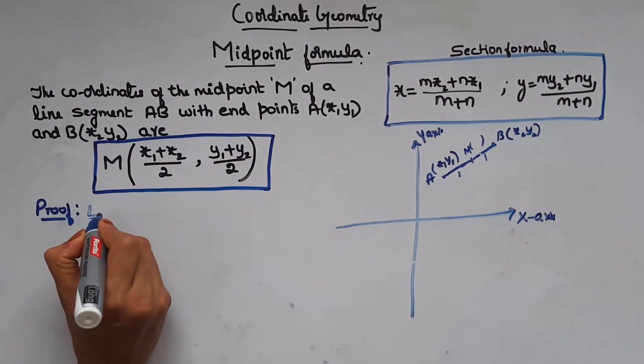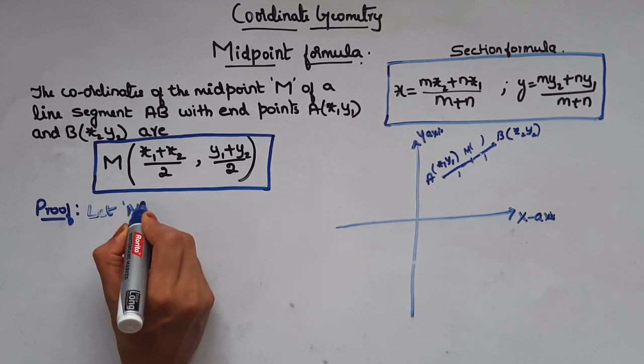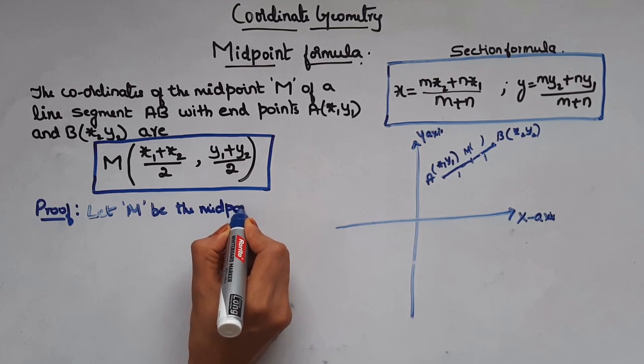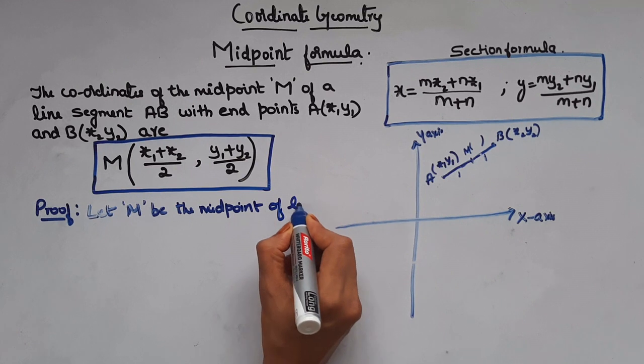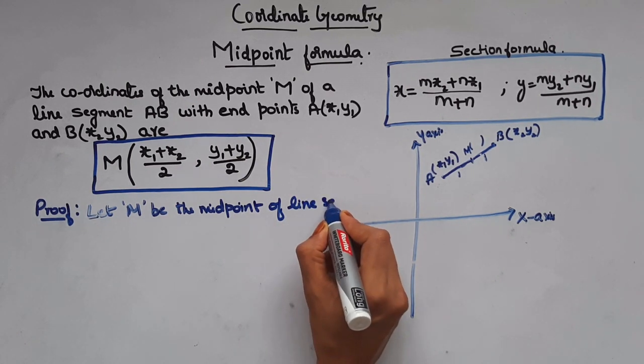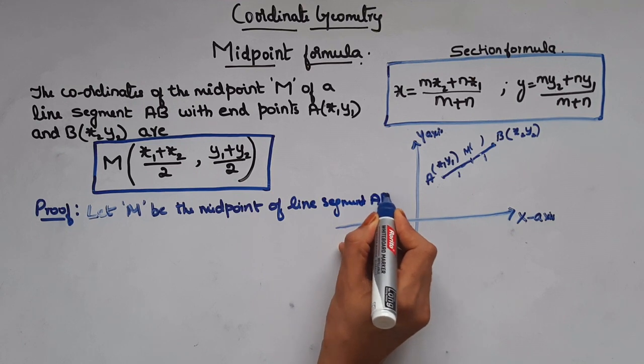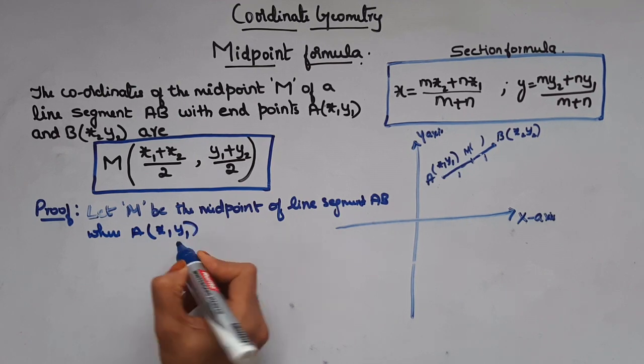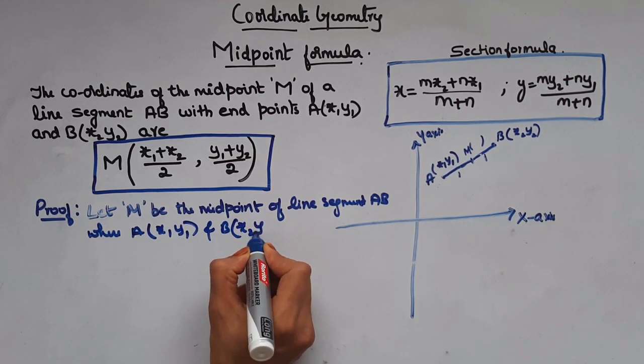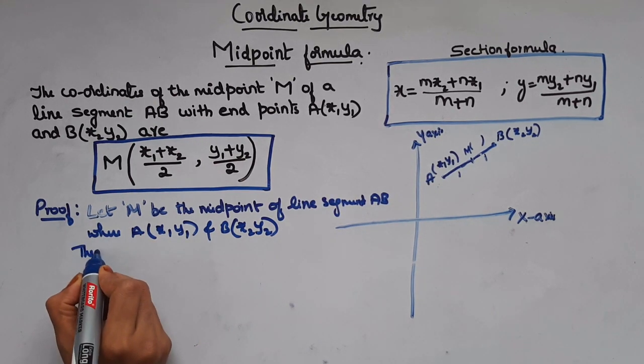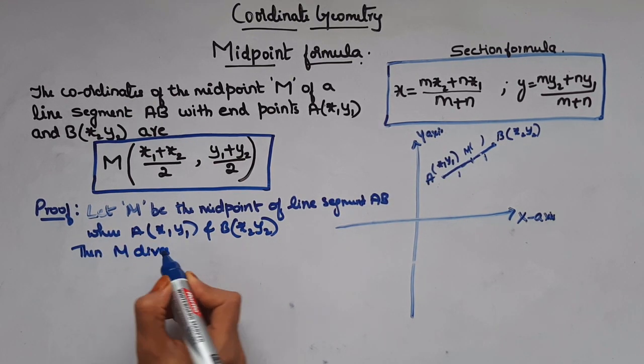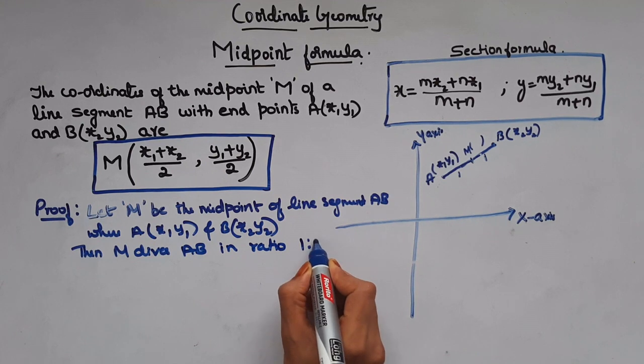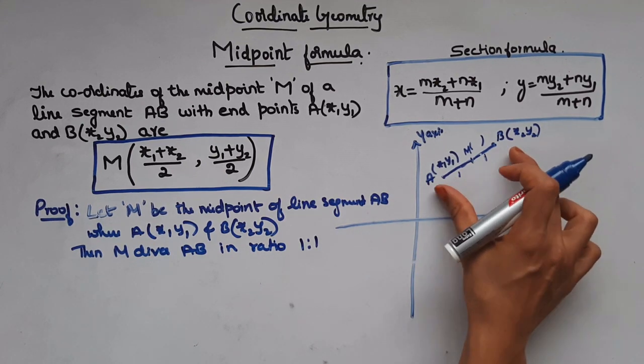So first let's write this in words. Let M be the midpoint of line segment AB, where A is (x₁, y₁) and B is (x₂, y₂). Then M divides the line AB in the ratio 1:1. Since it's a midpoint, it will divide the AB in the ratio 1:1.